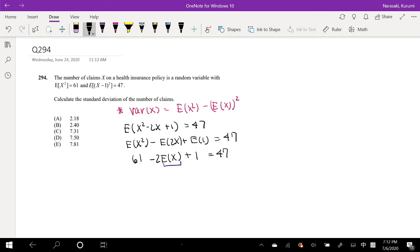So I can bring this to the other side. So 61 plus 1 minus 47 equals 2 times expectation of x. Or this is equal to, divide by 2 on both sides, and expectation of x is equal to, let me get my calculator out, 61 plus 1 minus 47, which is 15 over 2, which is also equal to 7.5, which is our expectation.